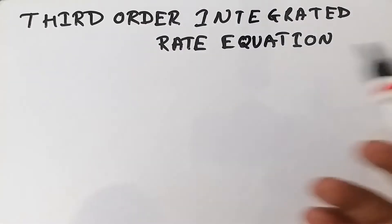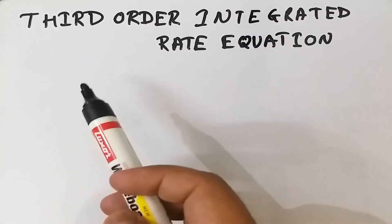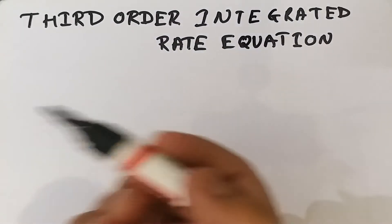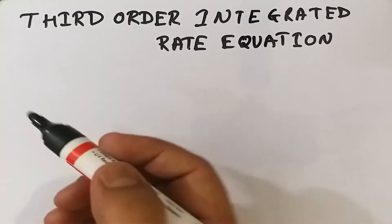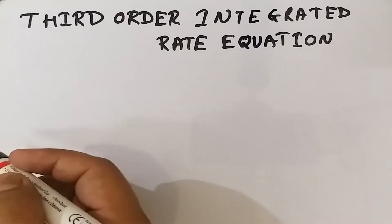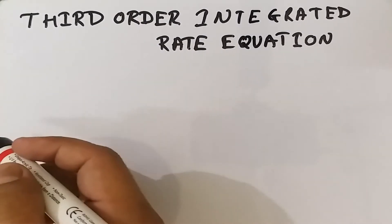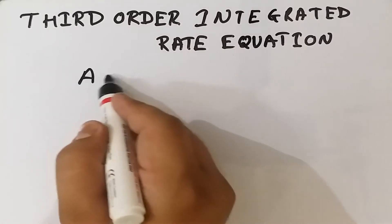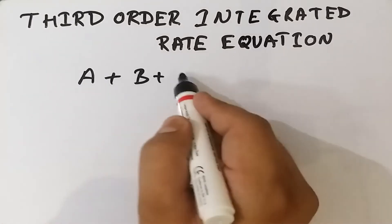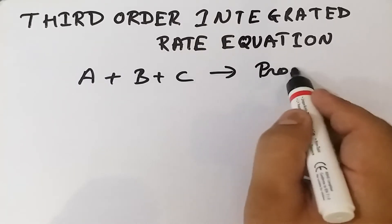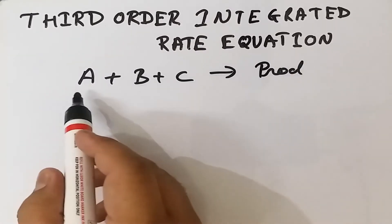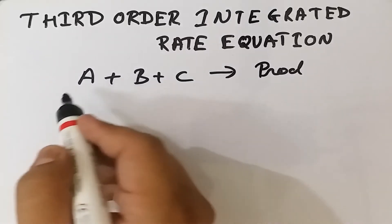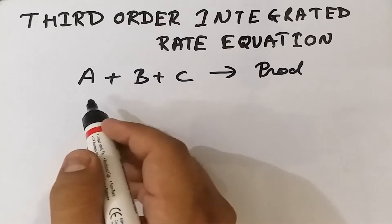Welcome. Today we are going to discuss the integral rate equation for third order reactions. Third order reactions are reactions which consist of three different types of molecules colliding together to form a product. If we consider A plus B plus C reacting to form any product, there are two to three conditions with which we can derive the integral rate equation.